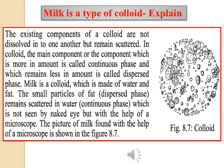In this slide I would like to say something about milk as a special type of colloid. Each colloid has two phases: a dispersed phase and a continuous phase. Milk is a colloid because it is made of water and fat. The small particles of fat, as the dispersed phase, remain scattered in water, which is the continuous phase. It cannot be seen with the naked eye but can be seen with a microscope, as shown in figure 8.7.